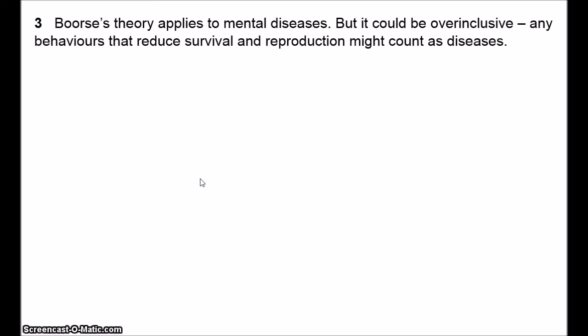Third, Boorse's theory is supposed to cover mental disease — one of the benefits of his theory is that it treats bodily disease and mental disease as equivalent. The problem is that it looks like it might be over-inclusive. We've already seen the example of homosexuality. But what about other behaviours that lower the probability of survival and reproduction, such as extreme sports? Some sports, like mountaineering, can be extremely dangerous. Should we say that a person is mentally diseased if they're attracted to such activities?